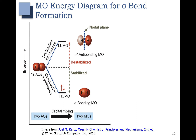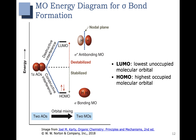Our two atomic orbitals, each from one hydrogen atom, came together to form two molecular orbitals: bonding and antibonding. Those two electrons fill from lowest energy to highest energy, so we have two electrons in the lowest energy molecular orbital and no electrons in the higher energy molecular orbital. You'll see the terms LUMO and HOMO. LUMO stands for lowest unoccupied molecular orbital — lowest in energy with no electrons. HOMO stands for highest occupied molecular orbital — the one with electrons.